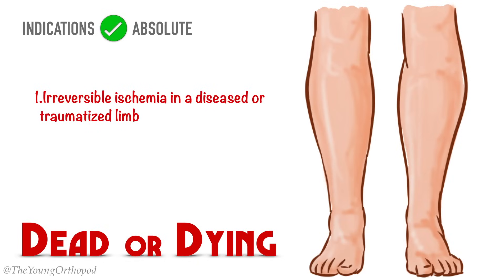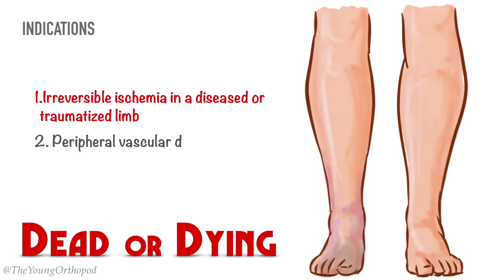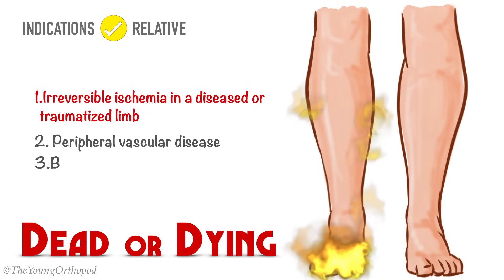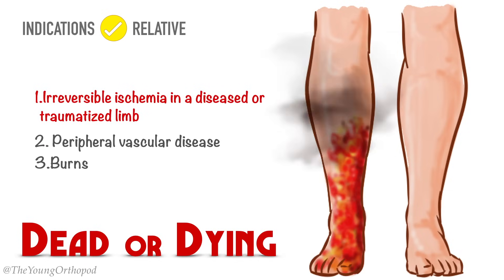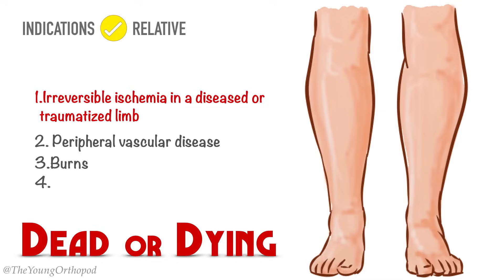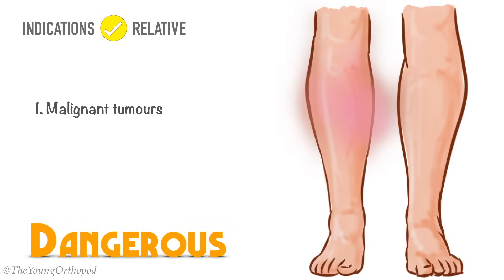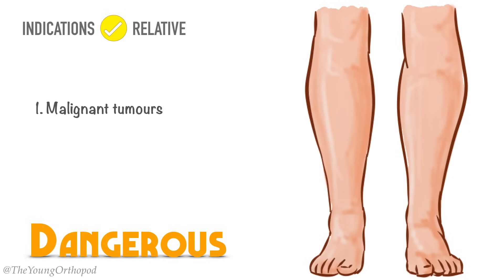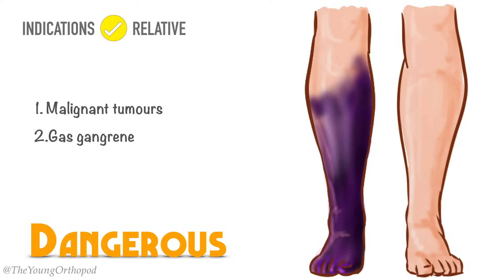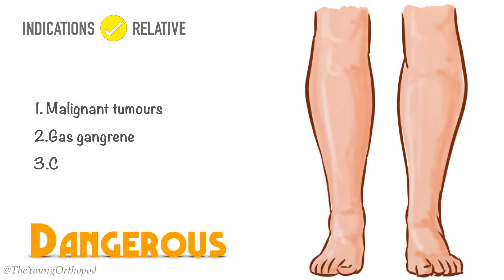Other relative indications include peripheral vascular disease, which is the most common indication, burns caused by thermal or electrical injury, and frostbite. Amputation for malignancy: the goal is to obtain a more functional residual limb, and rarely it is palliative. Potentially lethal sepsis and crush injury are also indications.